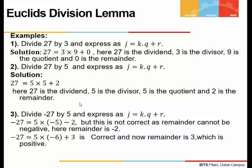What happens when we divide a negative number? For example, dividing minus 27 by 5: we might write it as 5 times minus 5 plus minus 2, which equals minus 27, but this is mathematically wrong because the remainder is negative. The correct representation is minus 27 equals 5 times minus 6 plus 3, giving minus 30 plus 3 equals minus 27. Here the remainder is positive (3), as required.